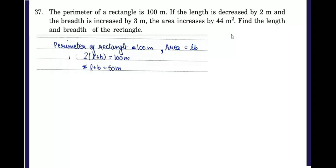Here in this question, perimeter is given to be 100 meters and we know that area of a rectangle is length into breadth. The formula for perimeter is 2 into L plus B. So we can write 2 into L plus B equals 100. L plus B will be 100 divided by 2, which gives us one equation: L plus B equals 50 meters.